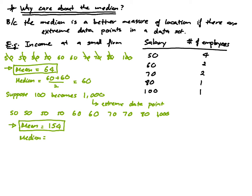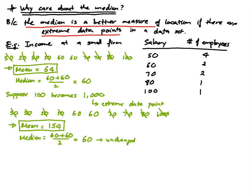But let's look at the median. Removing outermost values — 50 and 1000, 50 and 80, 50 and 70, 50 and 70 — I end up with 60 and 60 in the middle. So the median is still $60,000, unchanged from before. When you have extreme data points, the median is a better measure of location than the mean.